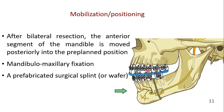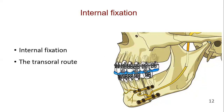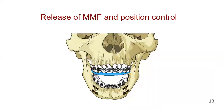A prefabricated surgical splint or wafer may be used to facilitate this. Internal fixation is performed with two straight mini plates, one above and one below the inferior alveolar nerve. The plate placement and drilling is usually performed from the transoral route. After completion of osteosynthesis on both sides, the MMF is released and the resulting occlusion is checked against the pre-planned position. The splint may be fixed to the maxillary teeth with a few thin wires and left in place during the healing phase to allow for neuromuscular adaption and position control.